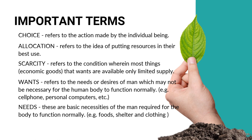We need to do this because we are confronted with scarcity, which refers to a condition wherein most things that we want are available only in limited supply. Our wants refer to our desires as human beings, which may not be necessary for the human body to function normally — these could be luxury goods such as computers, cell phones, and personal gadgets. Needs, on the other hand, are basic necessities for us to survive and function normally: food, shelter, clothing, and vitamins. These are important terms we need to understand in learning economics.